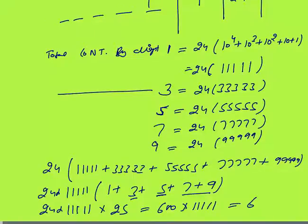Adding all contributions: 24 × (11111 + 33333 + 55555 + 77777 + 99999) = 24 × 11111 × (1+3+5+7+9) = 24 × 11111 × 25. That gives 6 × 11111 × 100 = 6666600 as the final answer. This question is a bit difficult but we can still find the solution in 2 to 3 minutes. You don't need to memorize a formula.